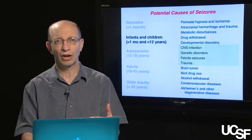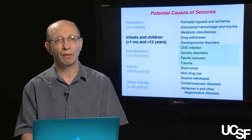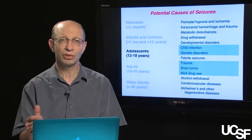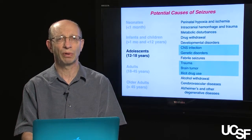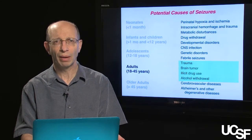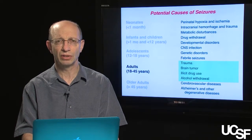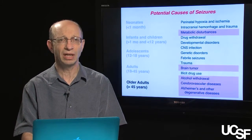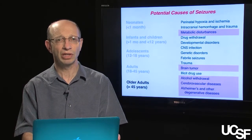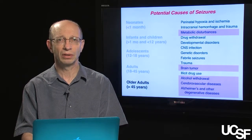For adolescents, the grouping includes CNS infections, genetic disorders, trauma, brain tumor, and illicit drug use. For adults, the causes include trauma, brain tumor, illicit drug use, alcohol withdrawal, and cerebrovascular disease. In older adults, cerebrovascular disease begins to predominate, along with Alzheimer's and other degenerative diseases, alcohol withdrawal, brain tumor, and metabolic disturbances.